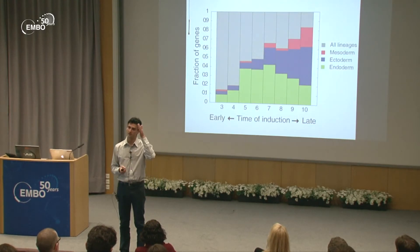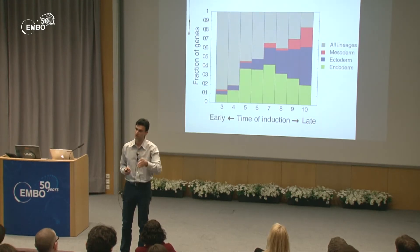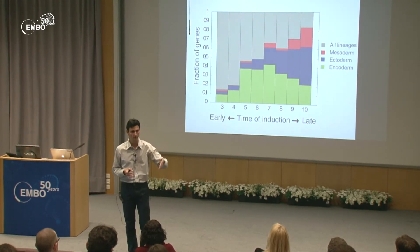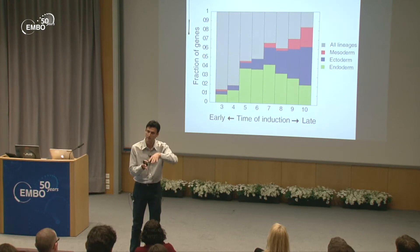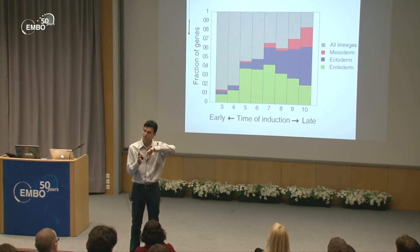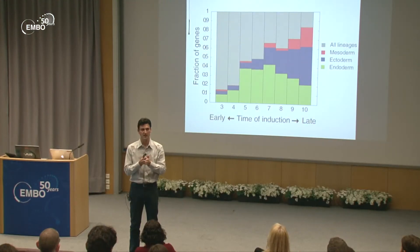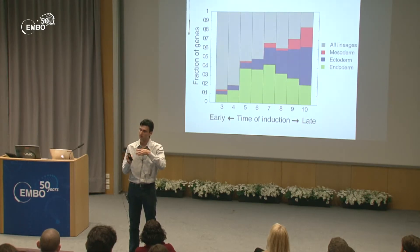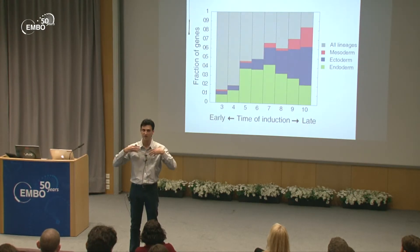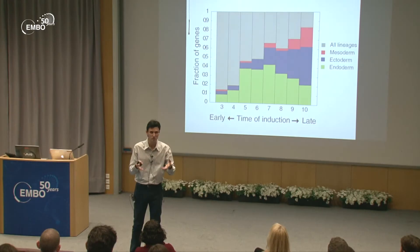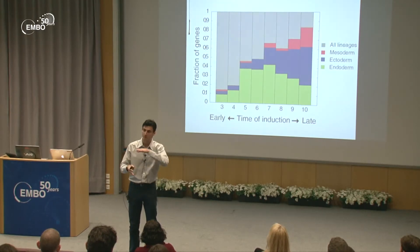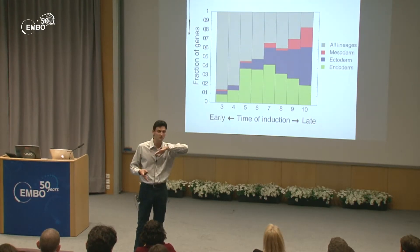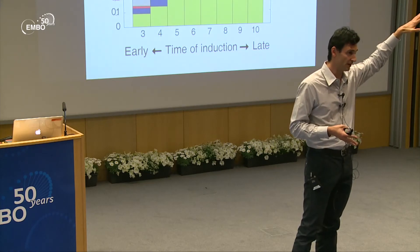We divided the genes into their time of expression. For every temporal period we asked which genes are coming on right now, and classified them into ectoderm, mesoderm, endoderm, or ubiquitous. We saw a nice trend: early on, a lot of the genes expressed are everywhere — ubiquitous — because the germ layers haven't been enunciated yet. But with time the expression becomes more and more specific, just like you would expect.